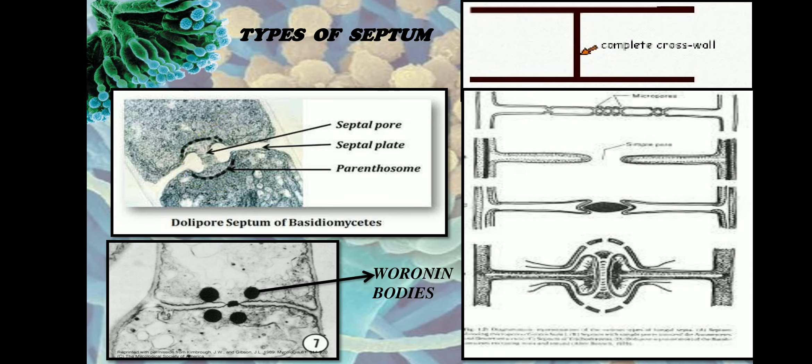Parenthosome is a semi-permeable membrane. So if nutrients or cytoplasmic contents need to move from one cell to another, they must pass through the parenthosome. Since it is semi-permeable, only a few cytoplasmic contents are allowed to move from one cell to another.